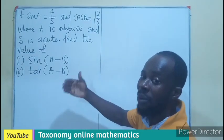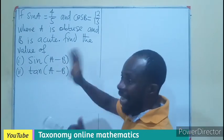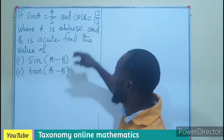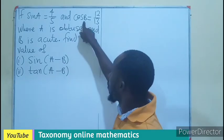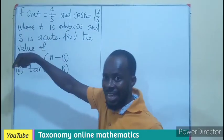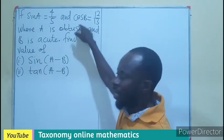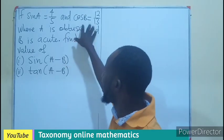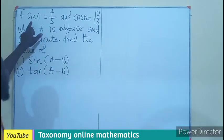Looking at this simply means we are looking for a compound angle. Now, we cannot just introduce the values directly because we are missing cos A and sin B. We need both of those in order to be able to apply the compound angle formula.